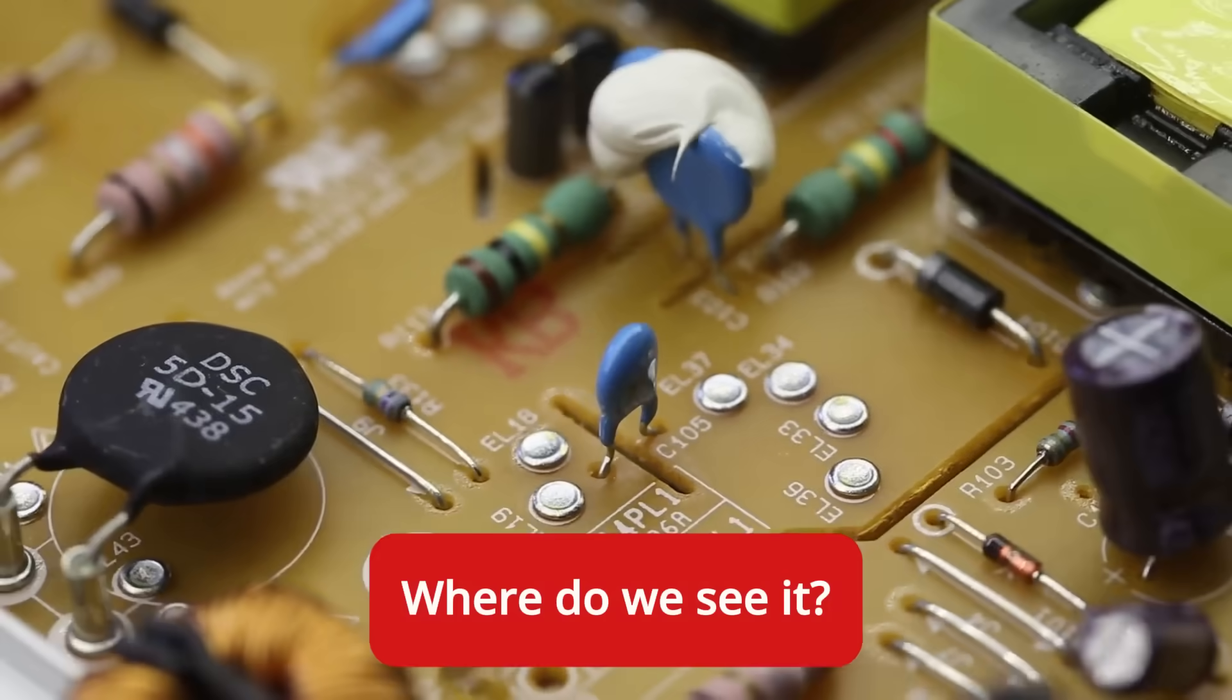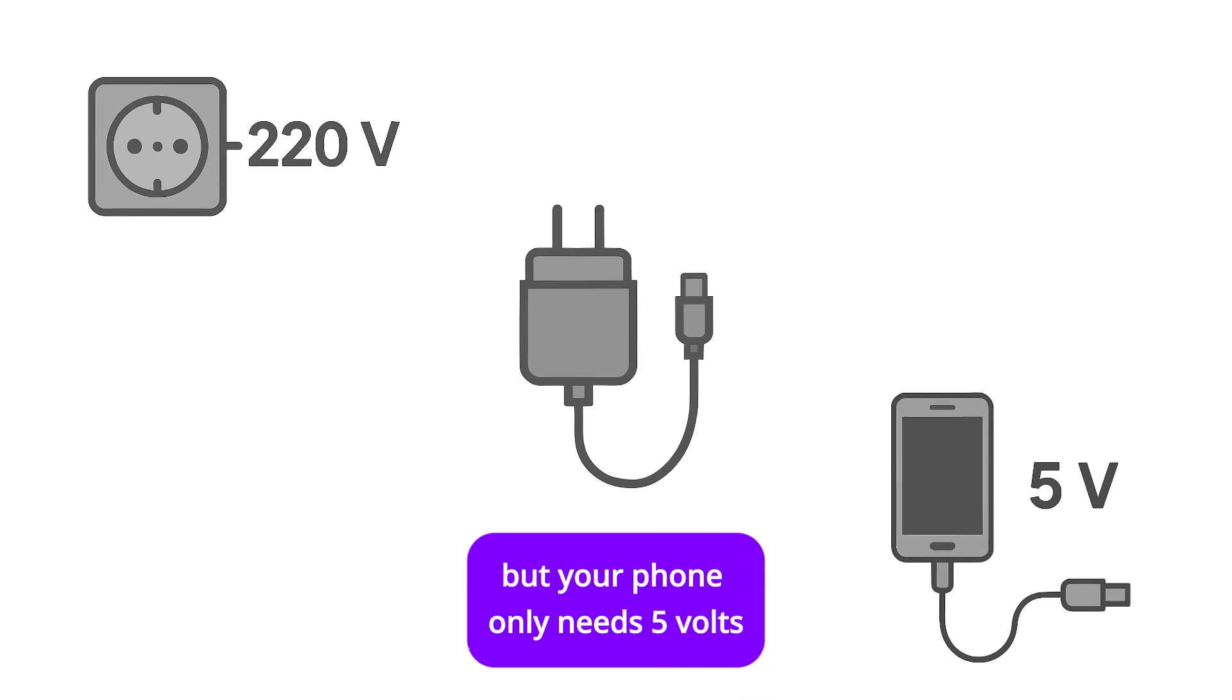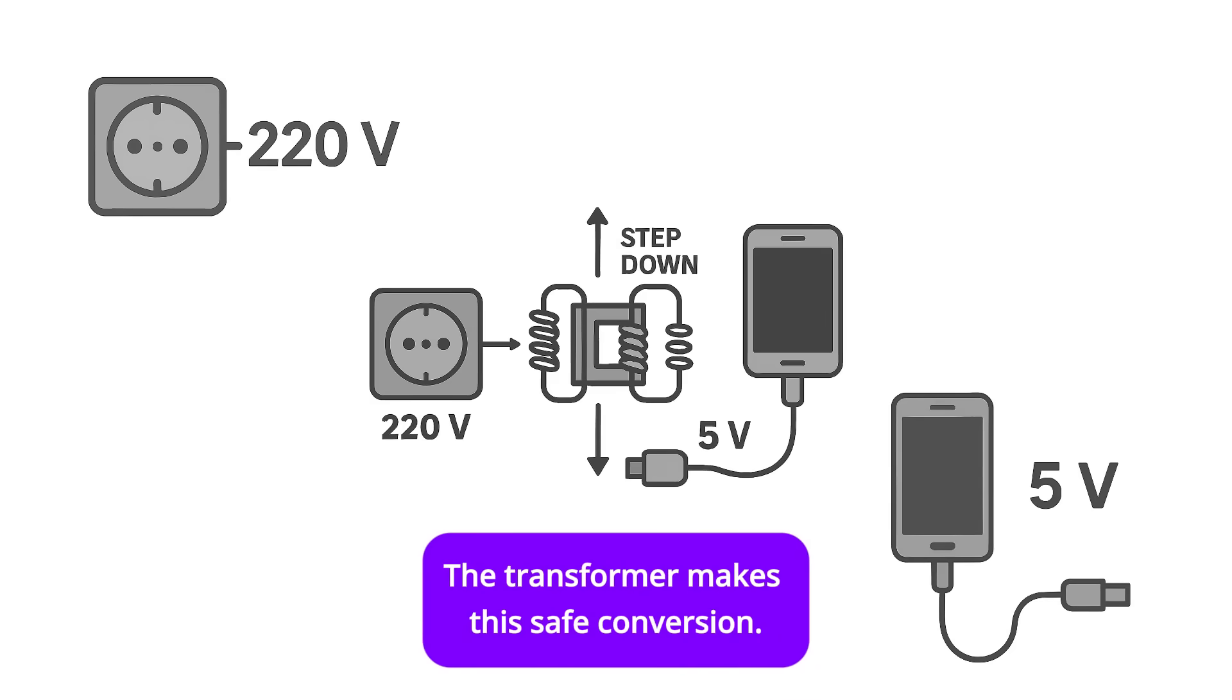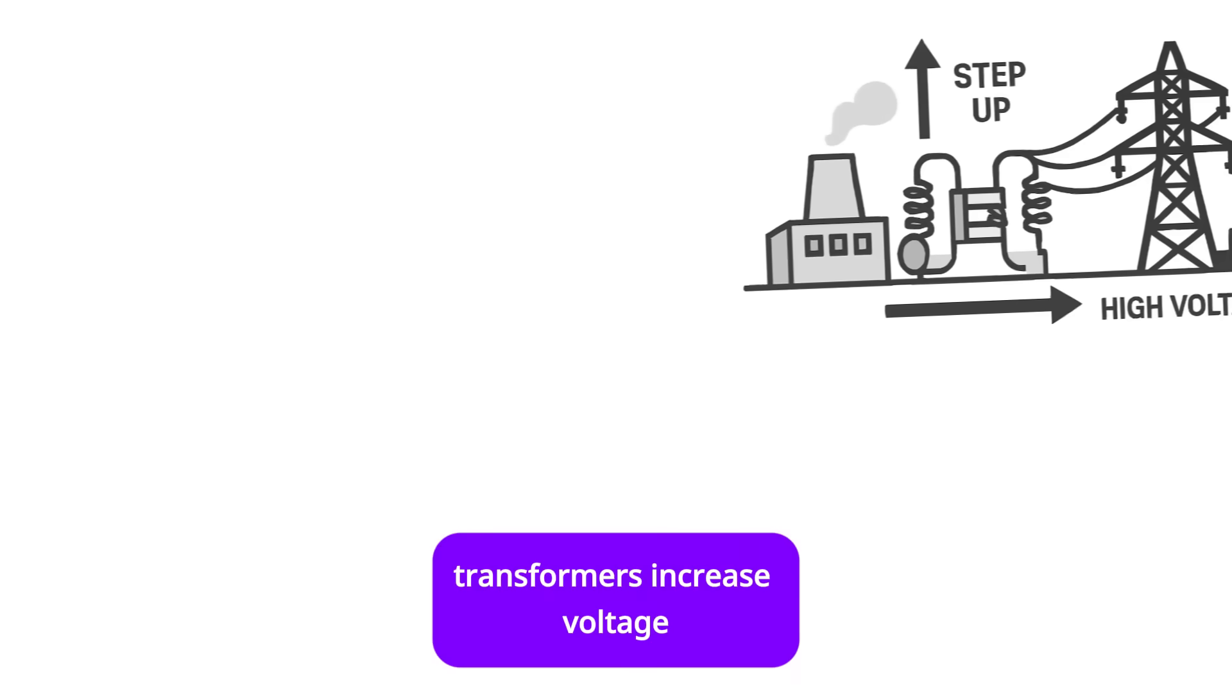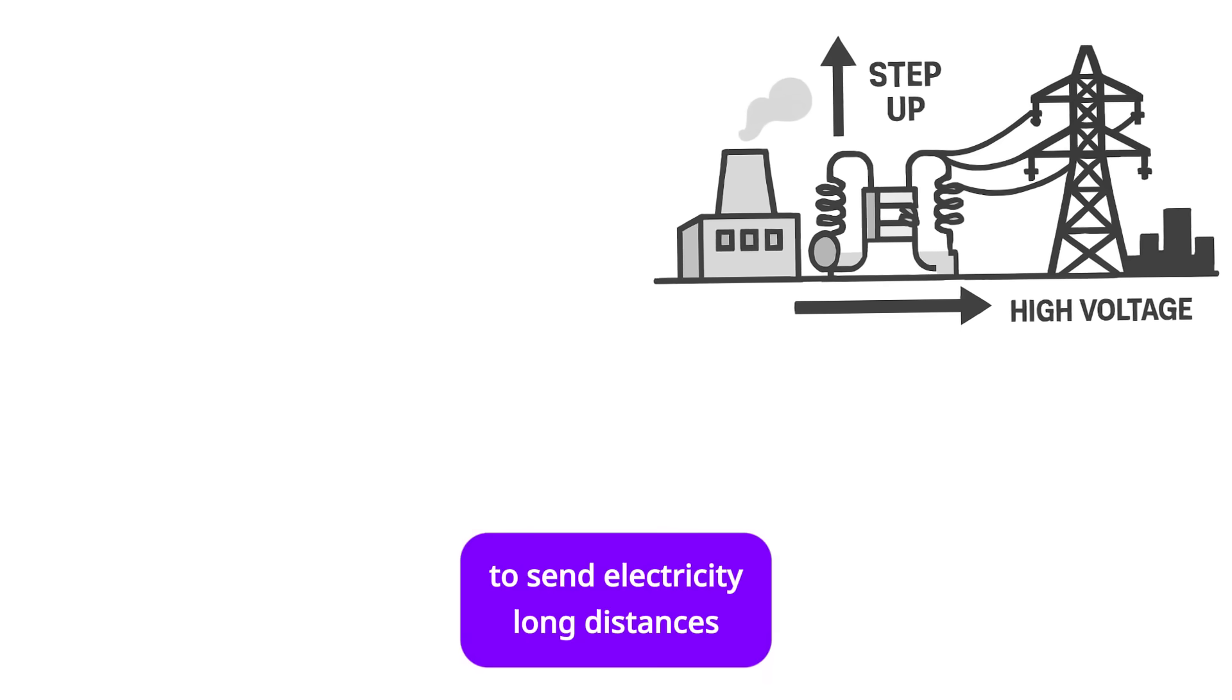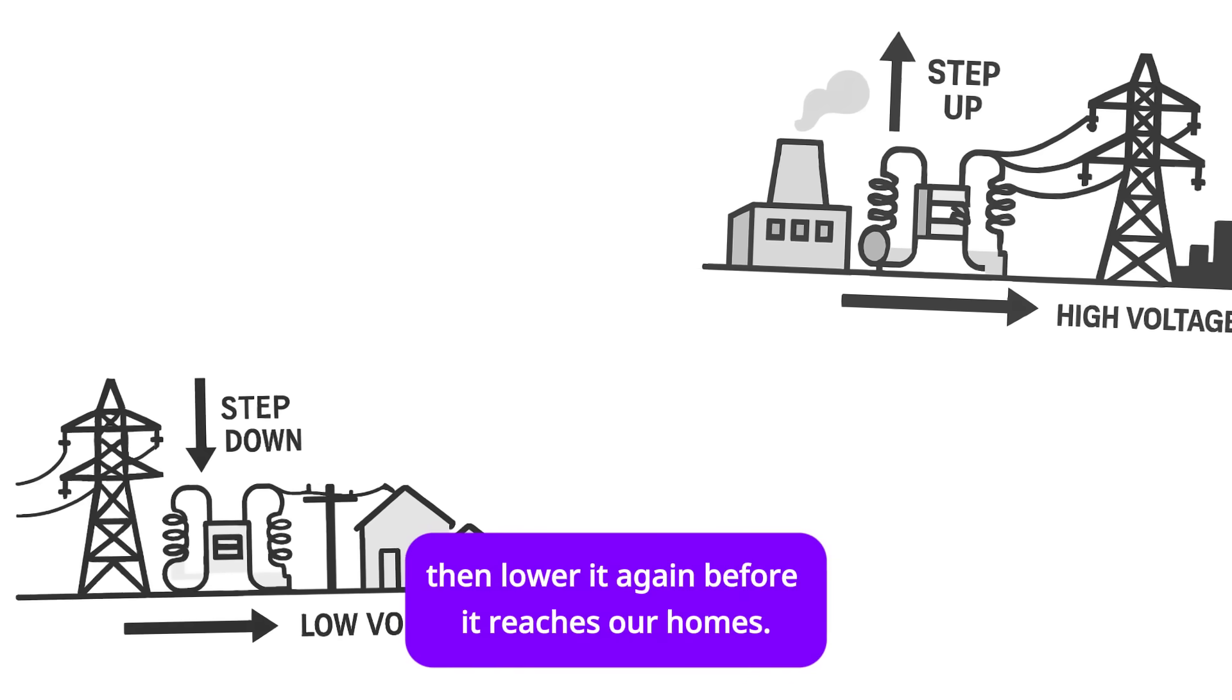Where do we see it? In phone chargers: home electricity is about 220 volts, but your phone only needs 5 volts. The transformer makes this safe conversion. In power grids, transformers increase voltage to send electricity long distances, then lower it again before it reaches our homes.